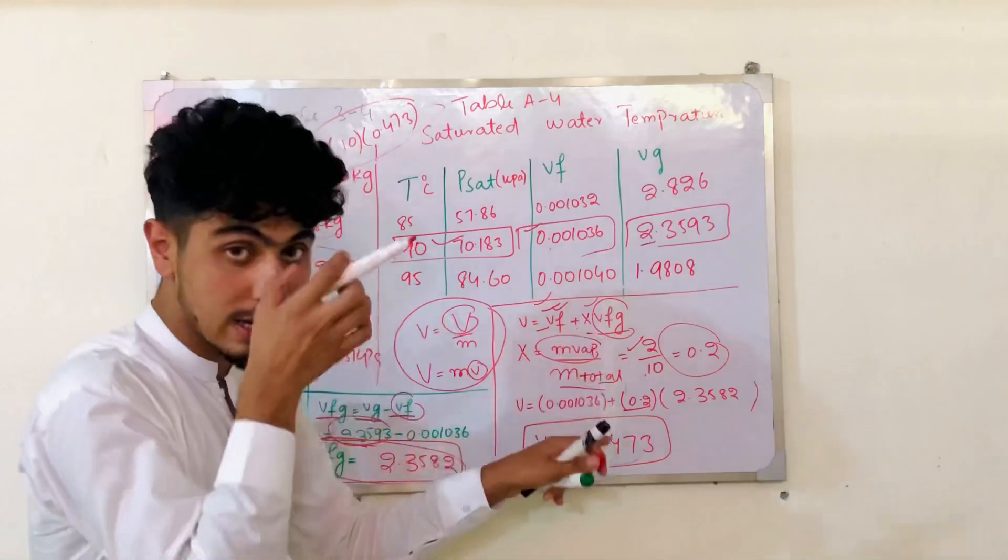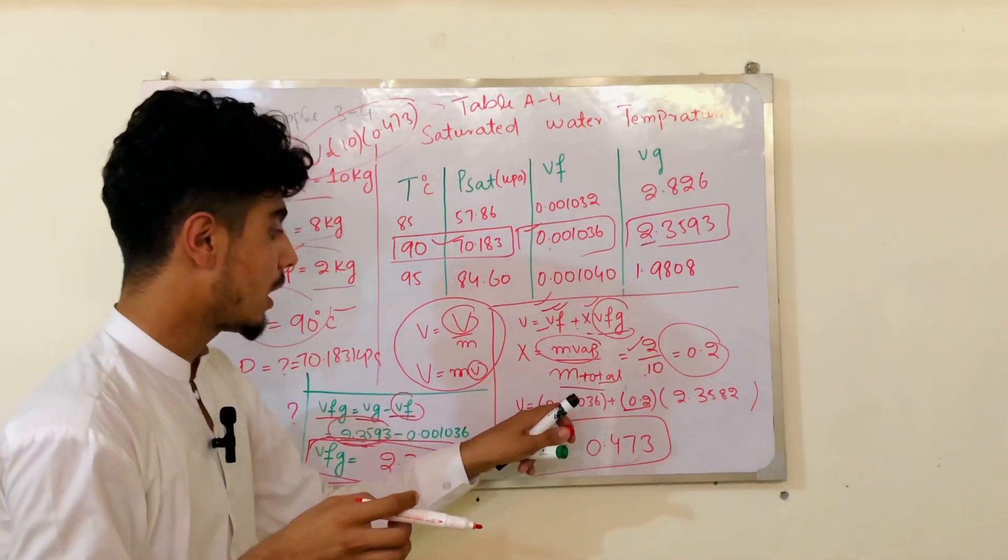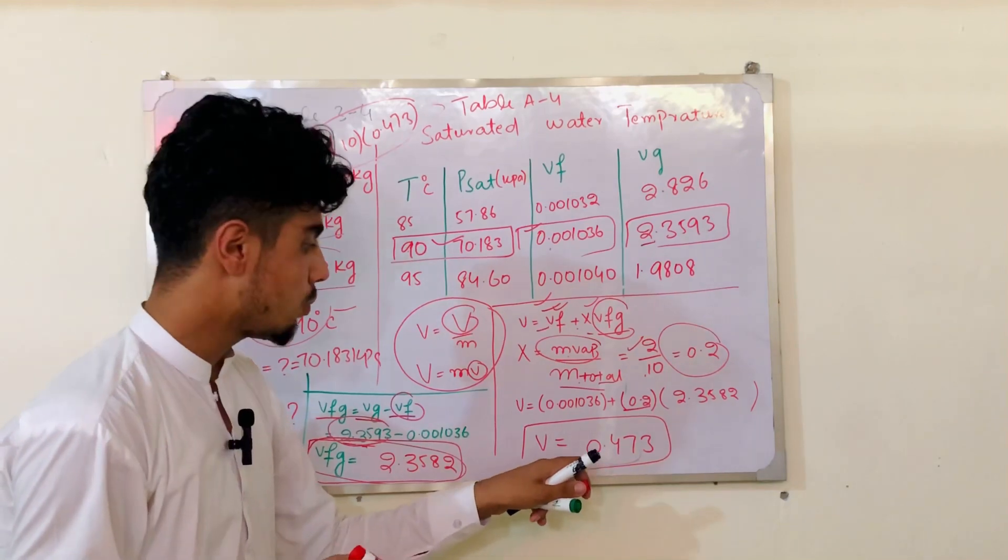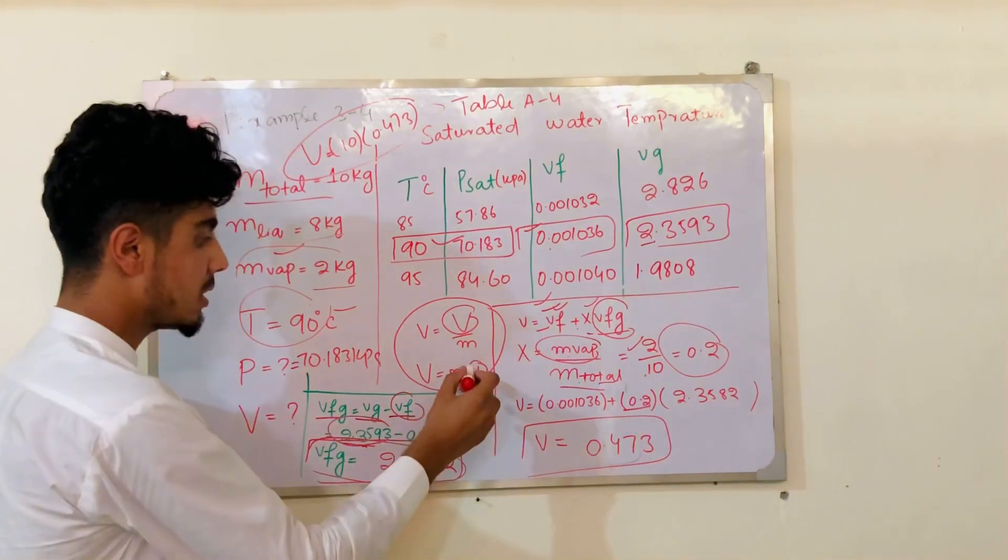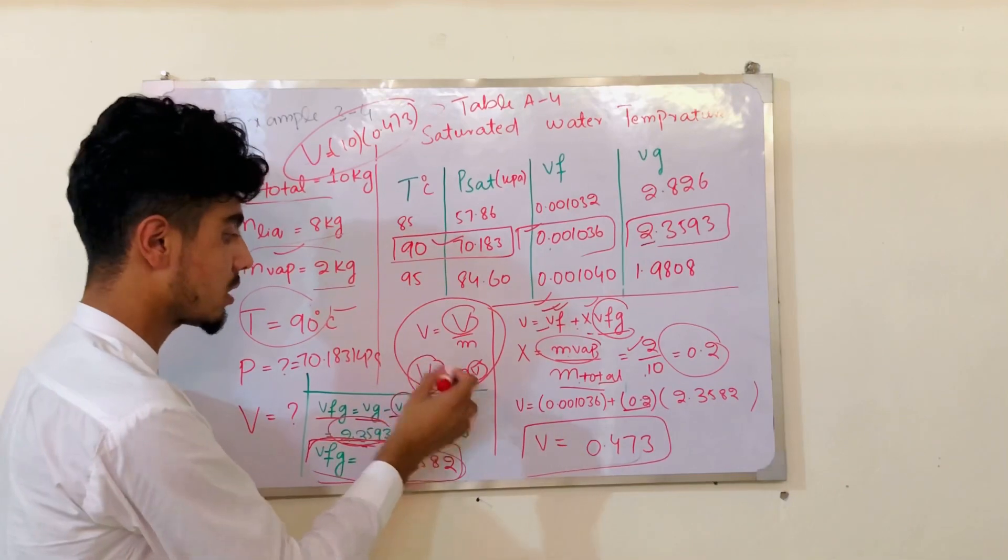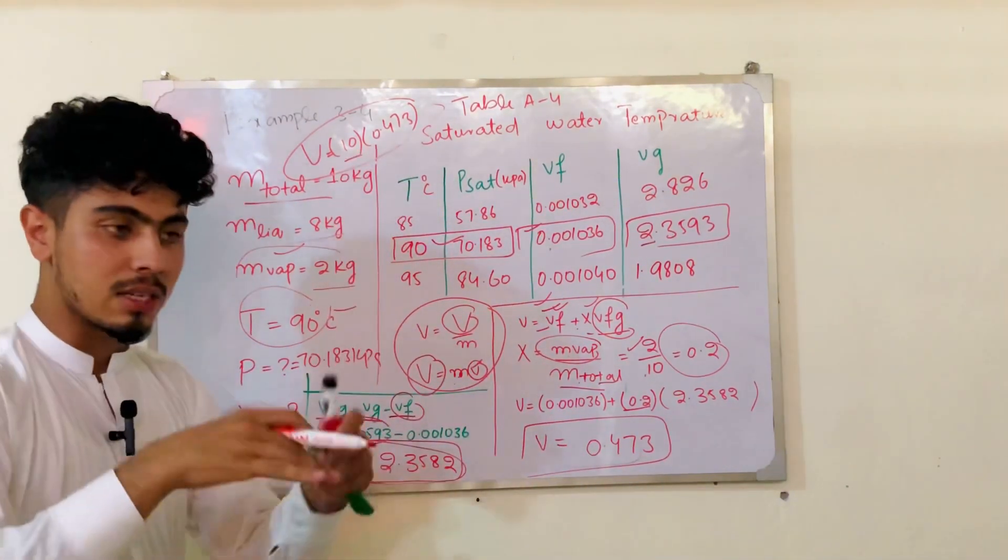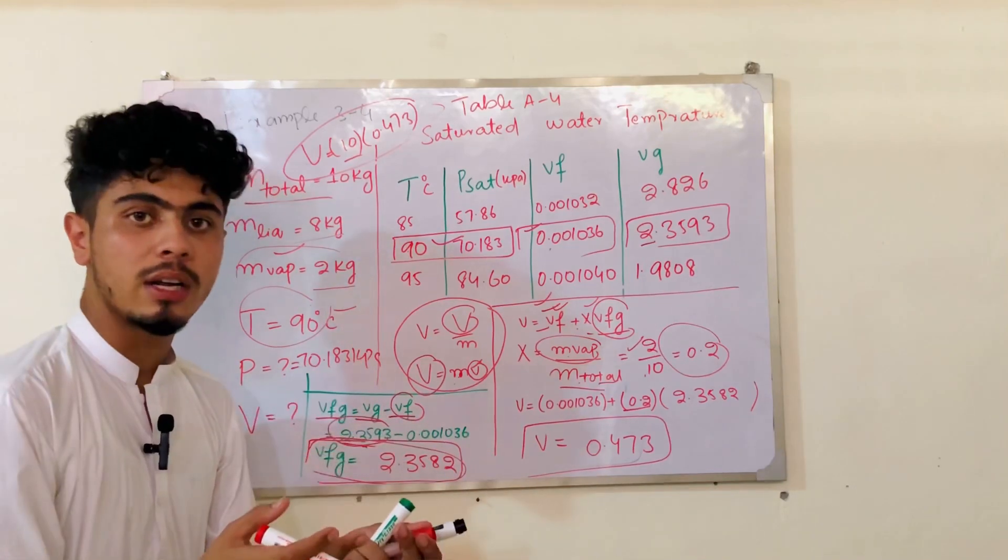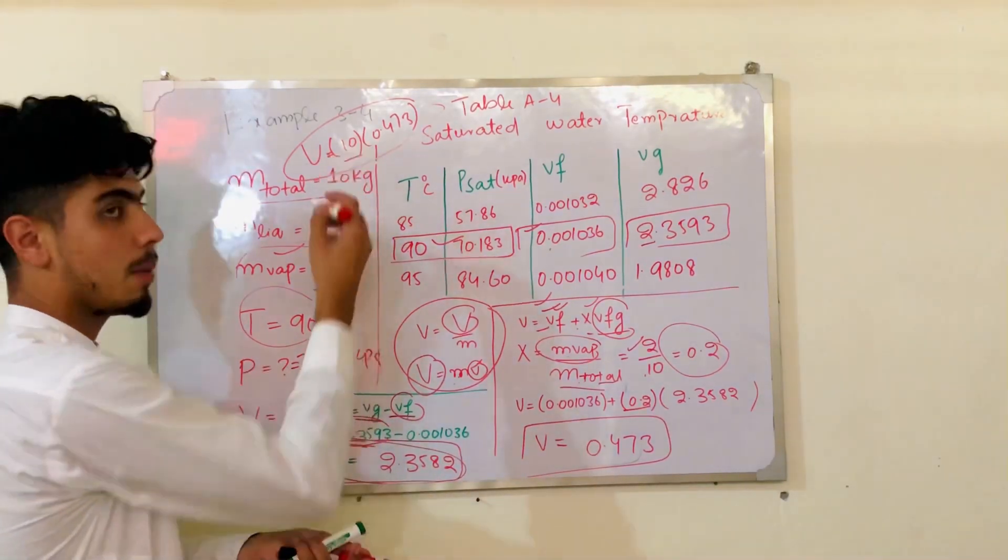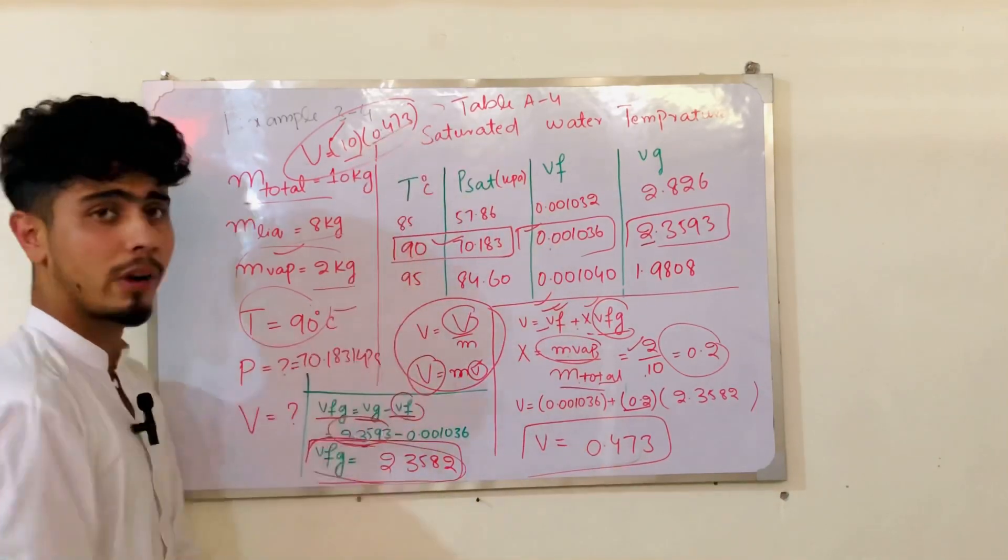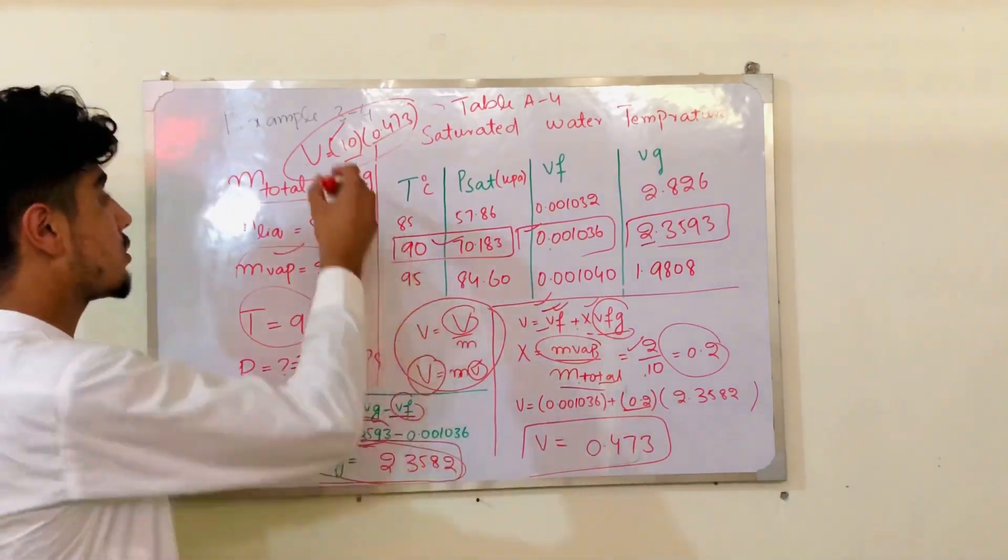We calculate the specific volume: V equals Vf plus X times Vfg equals 0.001036 plus the quality term, which gives us 0.473 cubic meters per kg. The total volume is mass times specific volume, which equals 0.473 cubic meters.